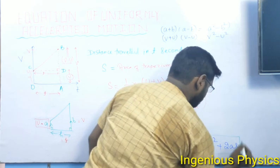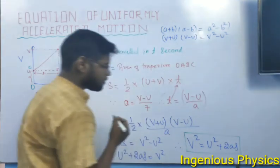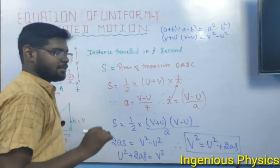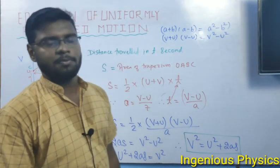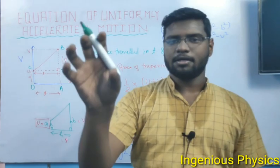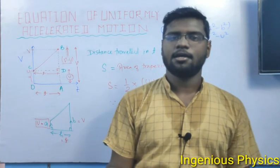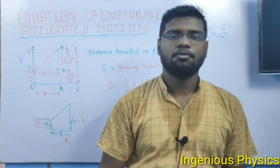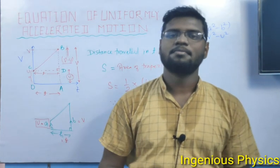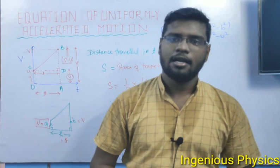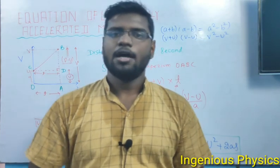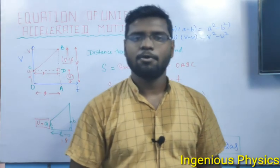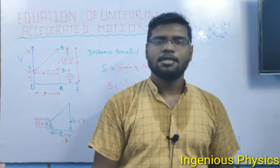In summary: to derive the first equation, calculate the slope of the VT graph. For the second equation, calculate area in two separate parts — triangle and rectangle. For the third equation, calculate the total area at once using the trapezium formula. I hope all these points are completely clear to you.